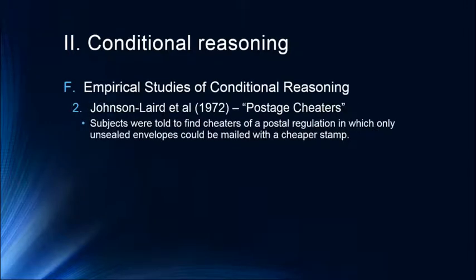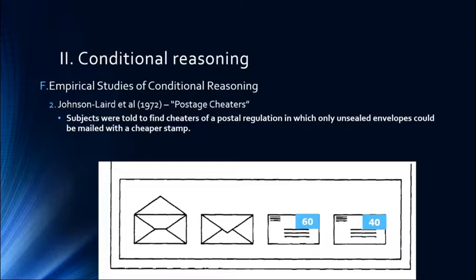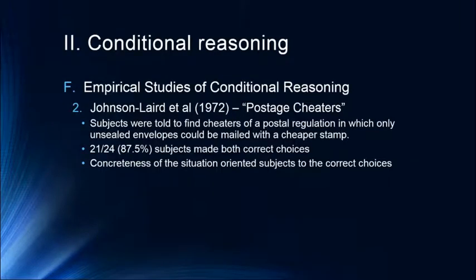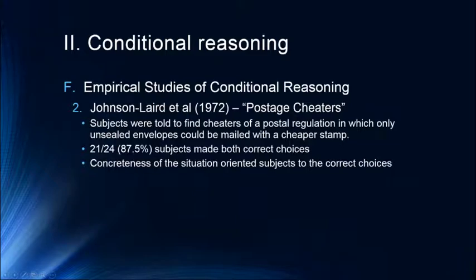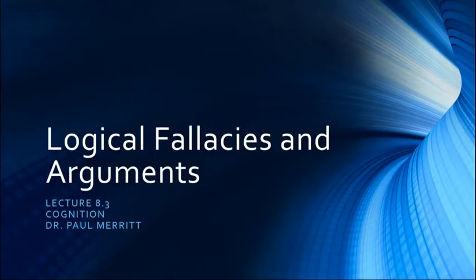Researchers then tried a postage cheater example. Subjects were told to find cheaters of a postal regulation where only unsealed envelopes could be mailed with a cheaper stamp. Given four envelopes, 87% of subjects made both correct choices: flip the sealed envelope to check for the cheaper stamp, and flip the cheaper stamp to see if the envelope is sealed. That concreteness and social motivation to catch a cheater led participants to the correct logical conclusion.